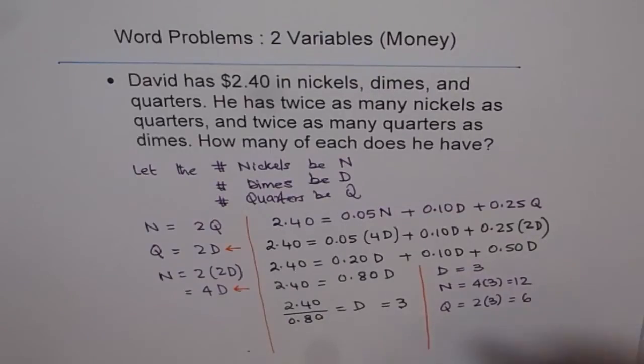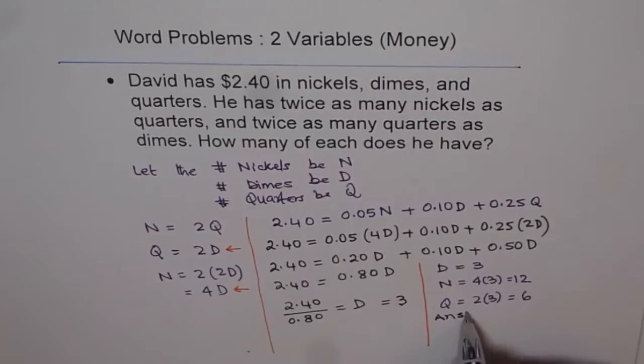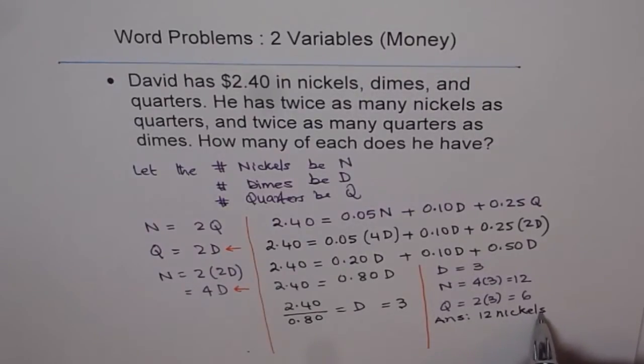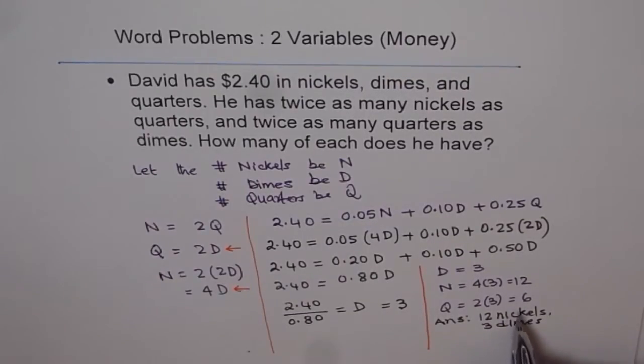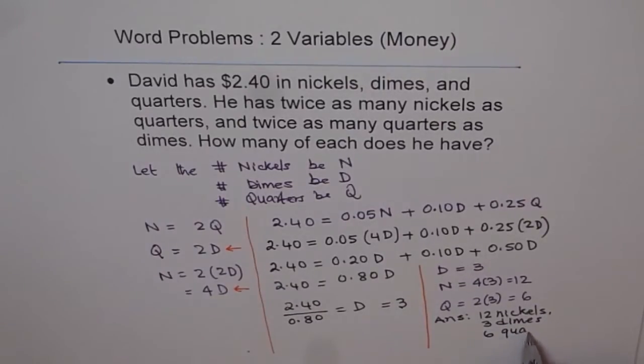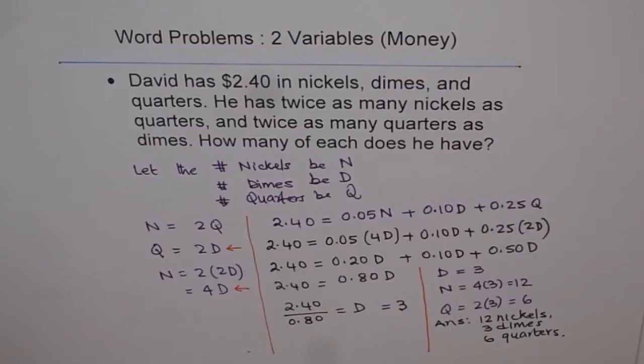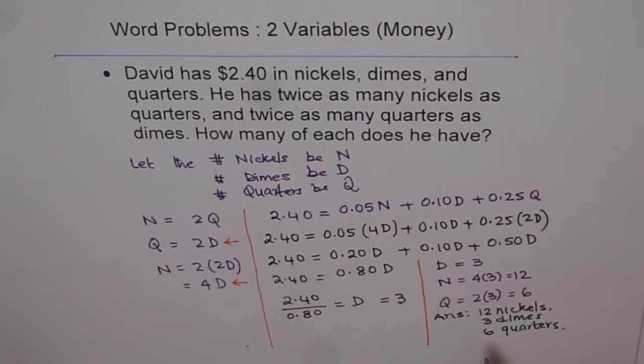So we can write down our answer now. David has 12 nickels, 3 dimes and 6 quarters. This is the distribution of coins which he has. That should make 2 dollars 40 cents. As an exercise, I'd like you to check it out. Multiply 12 by 0.05, 3 by 0.10, and 6 by 0.25, and see whether that amounts to 2 dollars 40 cents. That's the check you should do. Thank you and all the best.